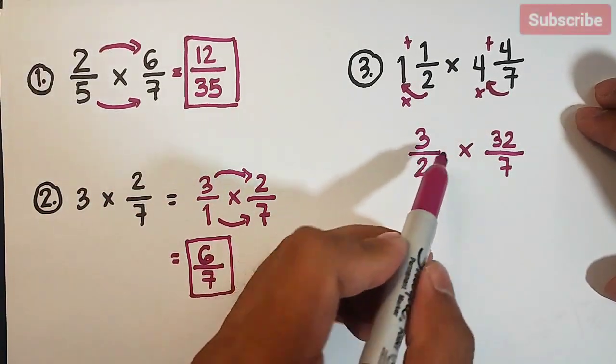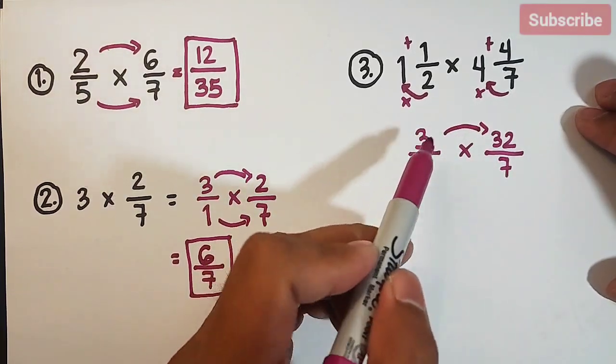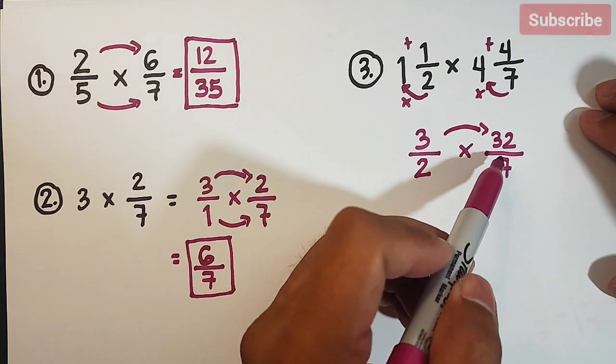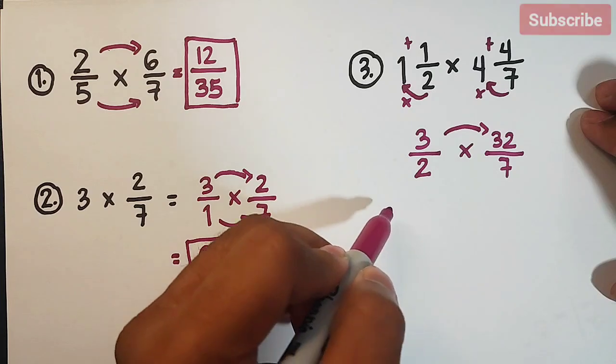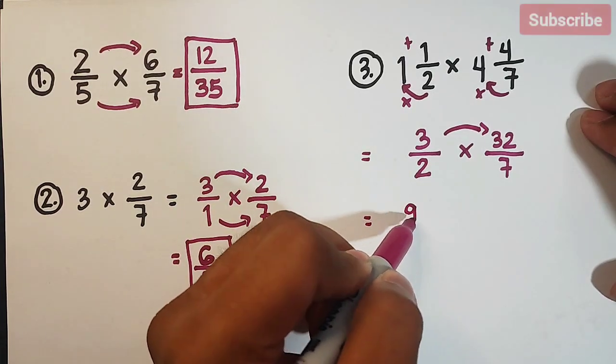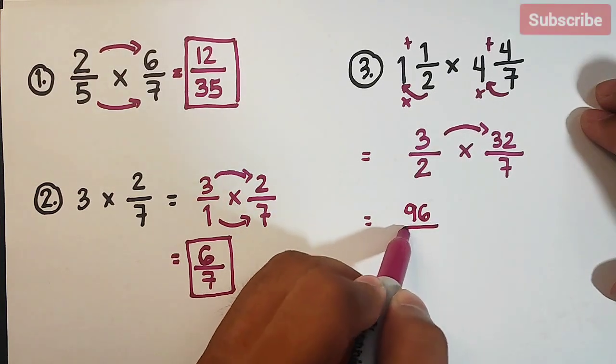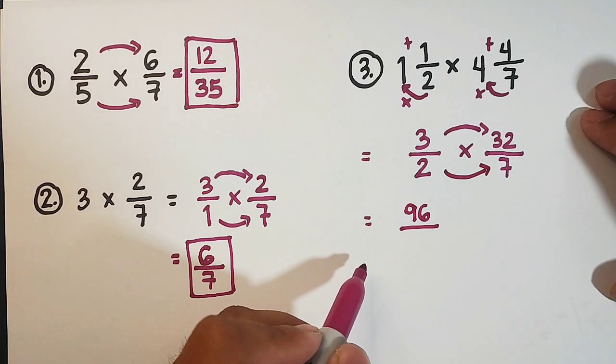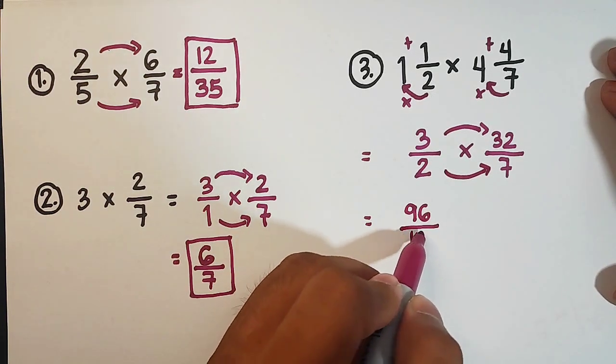Same process, multiply the numerators. Here 3 times 32, that is equal to—the answer is, so we'll put this here. The answer is 96, over, for your denominator, we have 2 times 7, which is equal to 14.